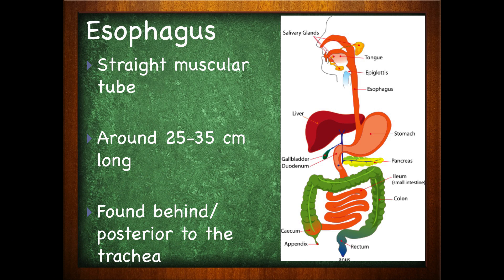Then we have the esophagus. The esophagus is a straight muscular tube around 25 to 35 centimeters long. It is found posterior to the trachea. If you ever get to do a dissection of a cadaver, you'll notice that the trachea has cartilaginous rings and the esophagus is right behind it. When there's nothing in it, the esophagus will be flattened. When food — the bolus — is going down, it will push out, pushing against the trachea to allow the food to squeeze through.